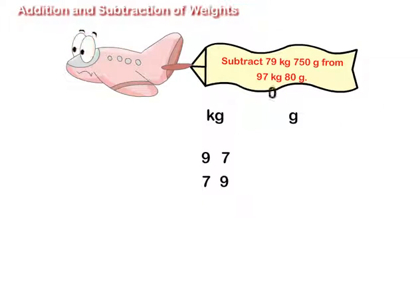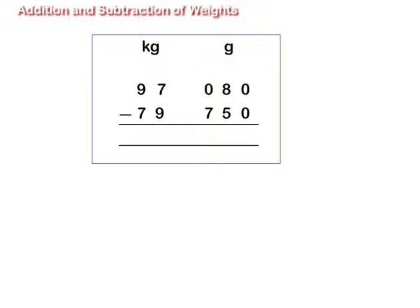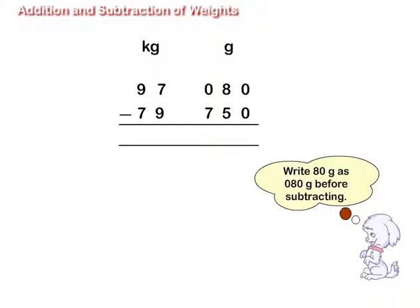Subtract 79 kg 750 g from 97 kg 80 g. Write values of kg and g in column form. Write 80 g as 0, 8, 0 g before subtracting.